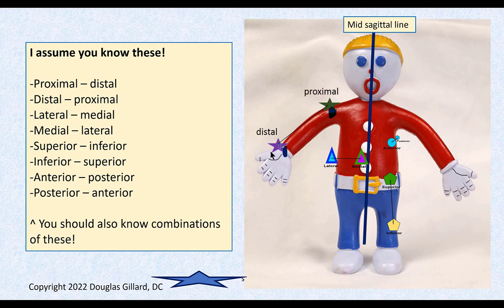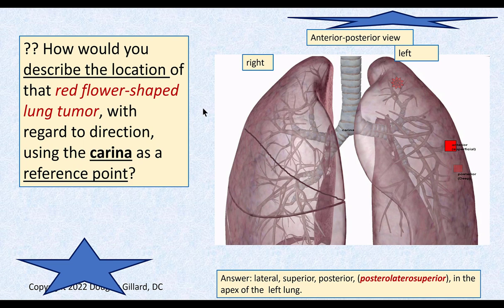You guys know the proximal and distal concept. The further away from the midline of the body, the more distal you are. The wrist is distal to the elbow; the wrist is distal to the shoulder; the elbow is distal to the shoulder. The shoulder is proximal to the wrist because it's closer to the body. The knee is more inferior to the ASIS.